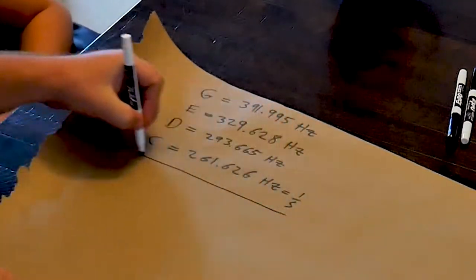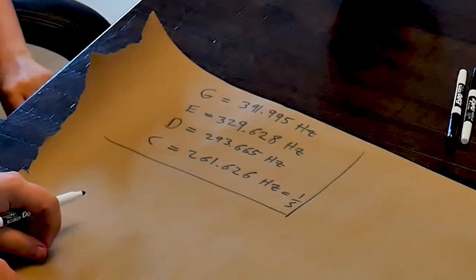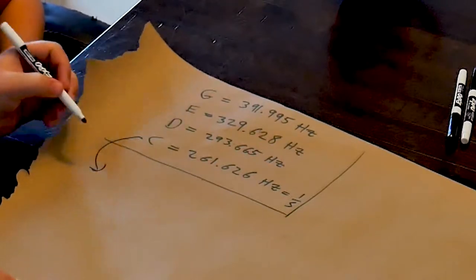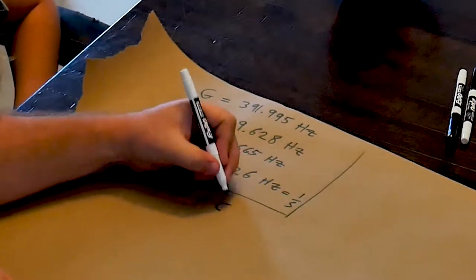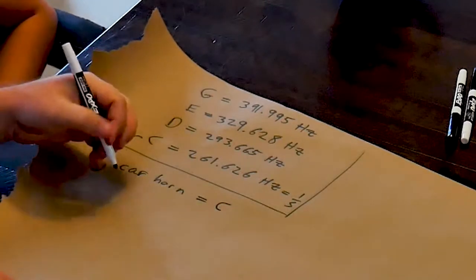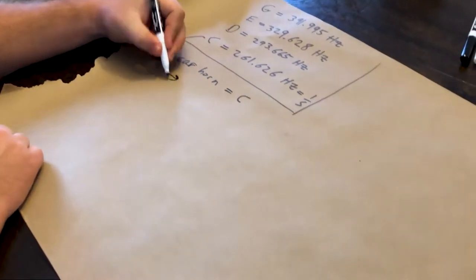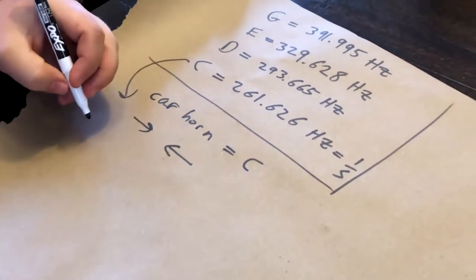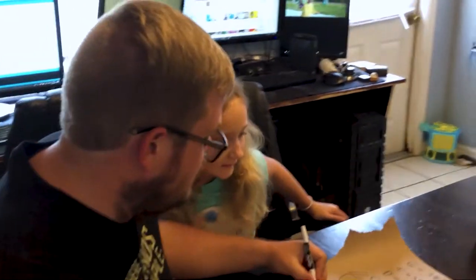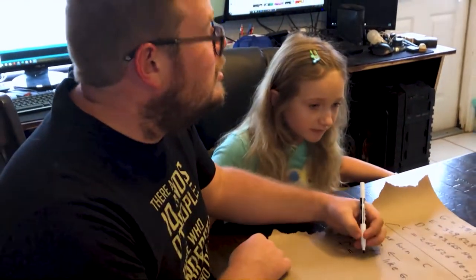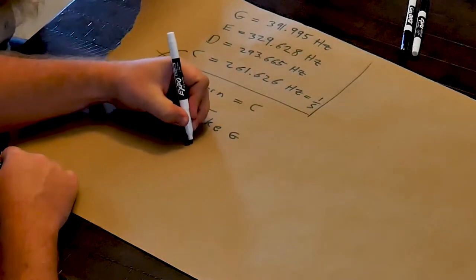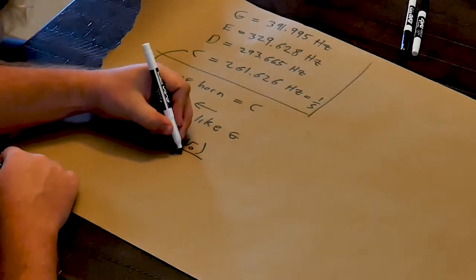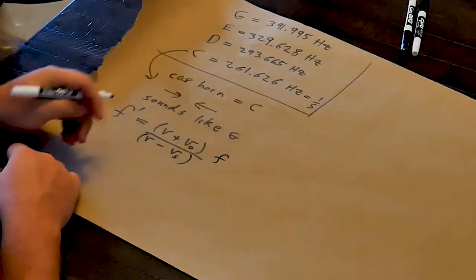So if we know this, we can use these frequencies. And if we use the Doppler effect to change the frequencies, we can take something that sounds like a C — say a car horn that equals a C — and then record two vehicles moving towards each other at a certain speed. We can change the sound and make it sound like a G. The equation we're going to use is: F prime equals V plus V-O divided by V minus V-S, times the actual frequency.